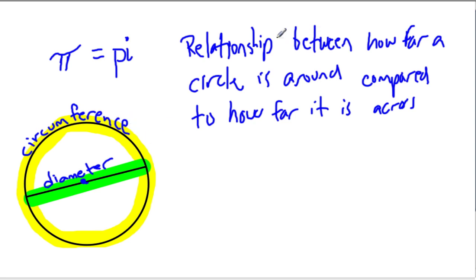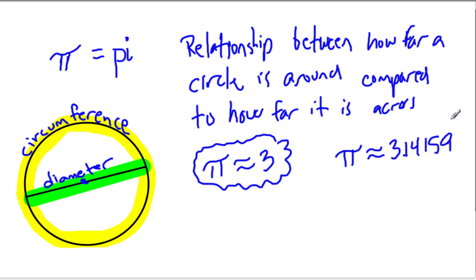So pi, we said it's a relationship between how far a circle is around compared to how far it is across. And we said that pi is about the number three. And that's an important association. In your mind, you should always associate pi with about the number three. And depending on the problem, you may need to remember pi as far as 3.14159. But that's as far as we'll ever ask you to remember it. But it's about three. Start to think of these two numbers as almost the same. That'll really help you.